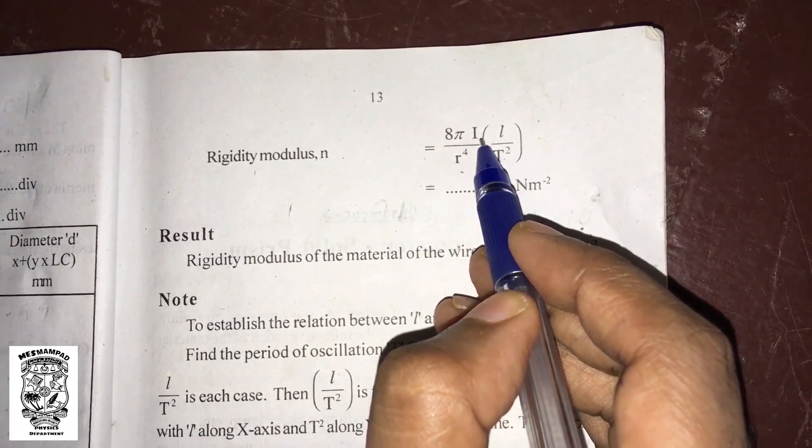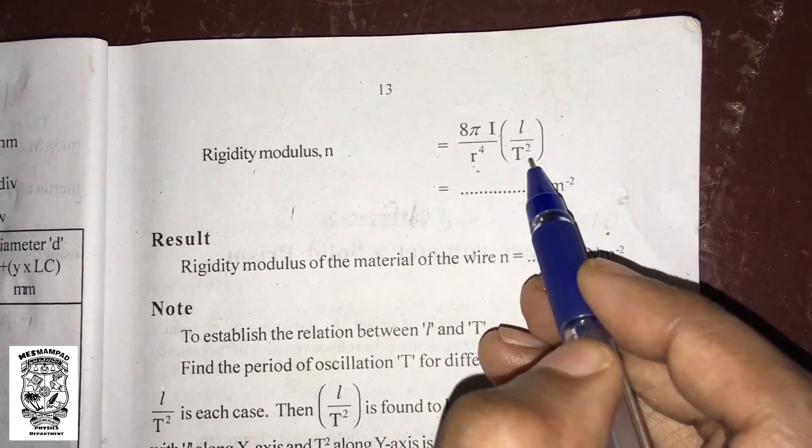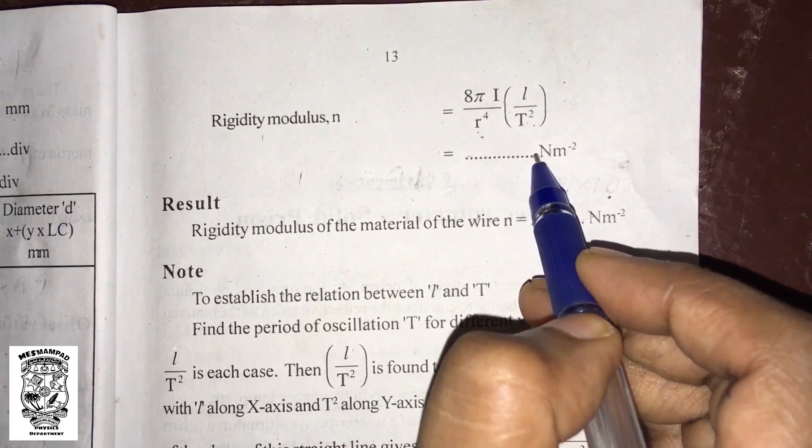I is the moment of inertia of the disc, R is the radius of the wire, and mean L by T squared. From this we can calculate the rigidity modulus of the wire.